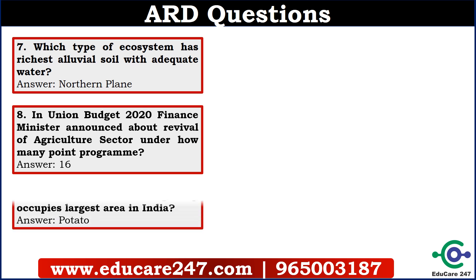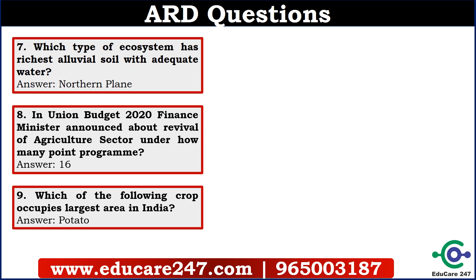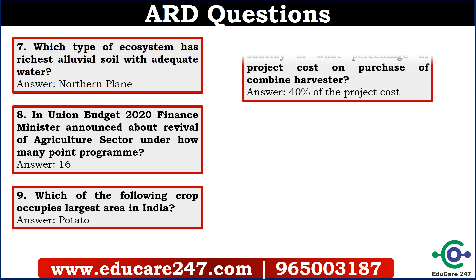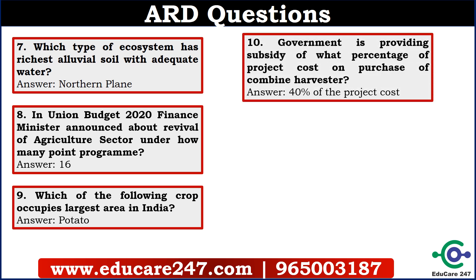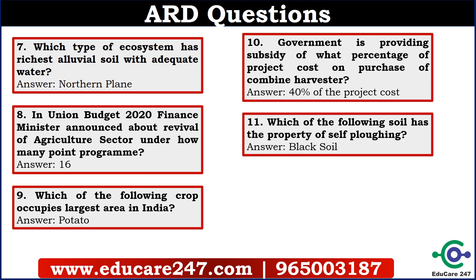It was a very simple question. The ninth question is: which of the following crop occupies the largest area in India? You have to be careful — it is asking about area. The answer is potato. The tenth question is: the government is providing a subsidy of what percentage of project cost on purchase of a combined harvester? The answer is 40% of the project cost.